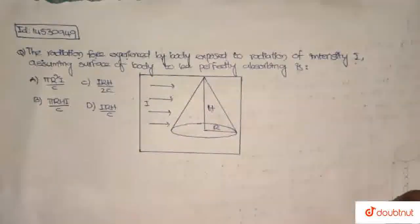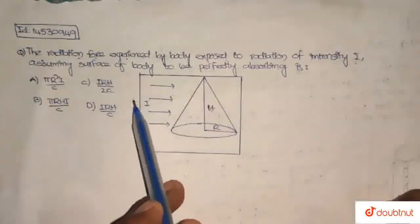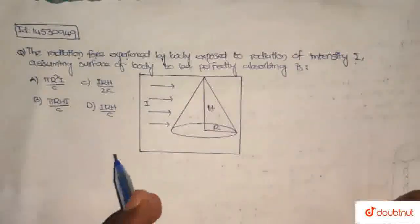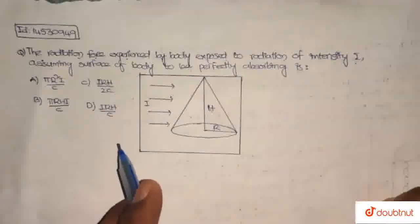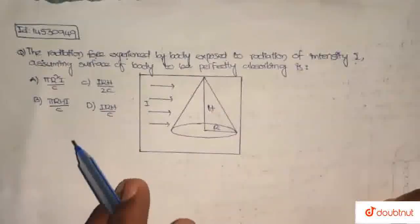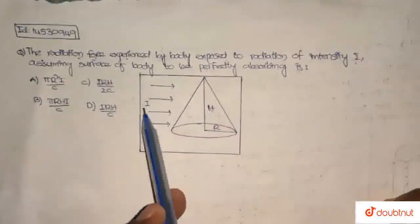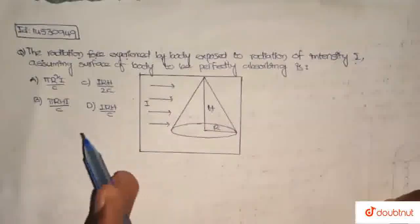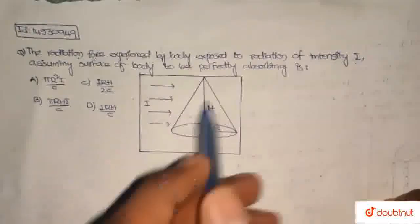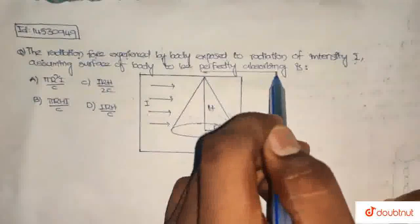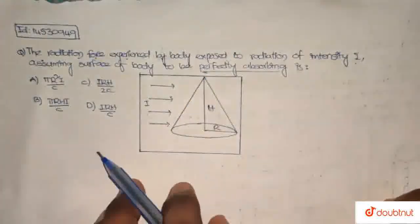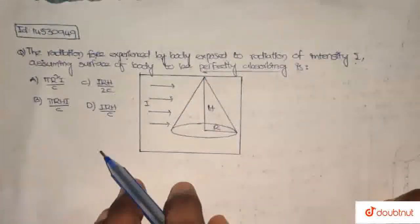So here we can see this body. The radiation force is experienced by a body with intensity of radiation I, and the surface of the body is perfectly absorbing, meaning the intensity of the radiation is absorbed by the body.